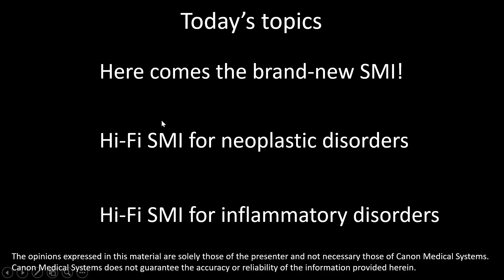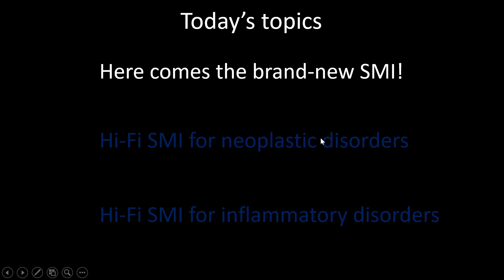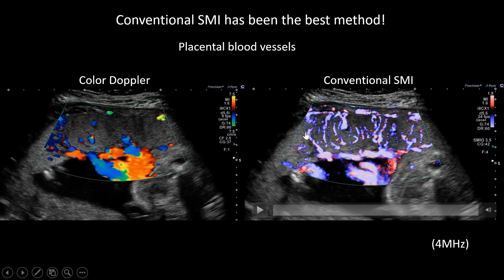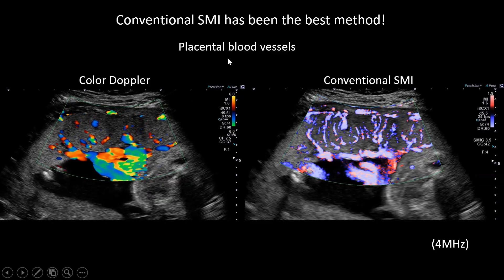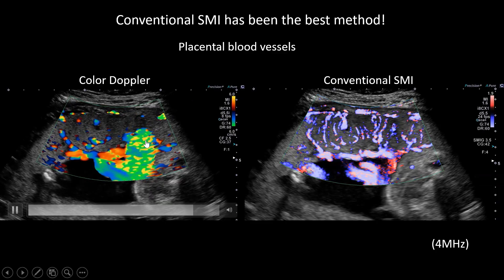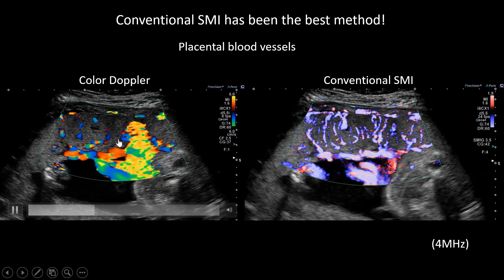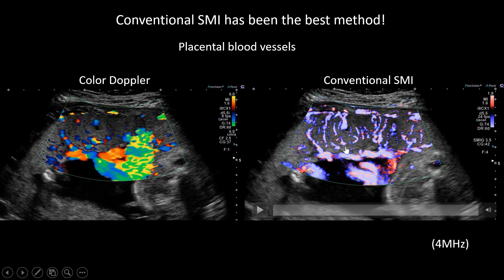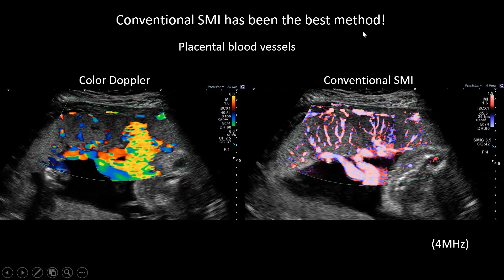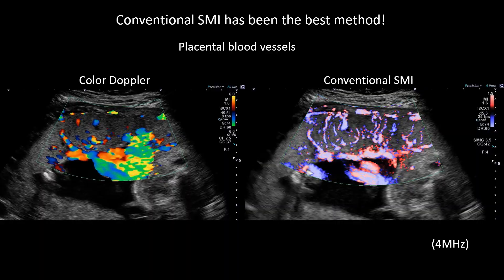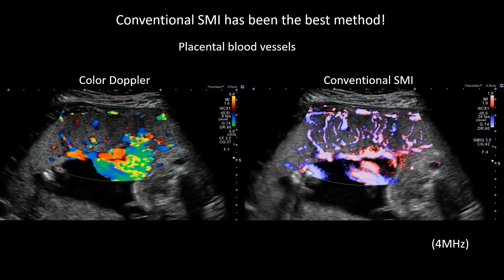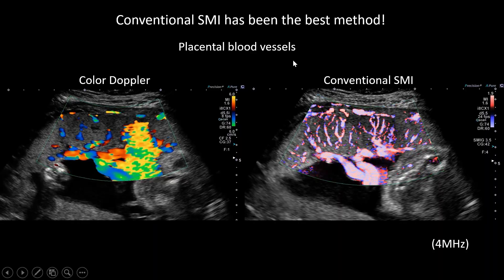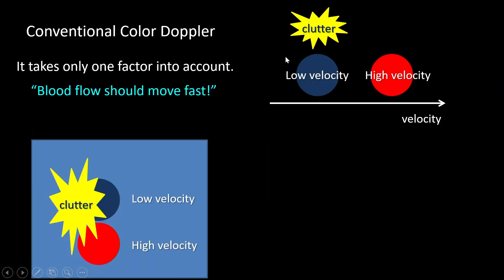Conventional SMI has been the best method so far. This shows the placenta and blood vessels by color Doppler — not so bad, you can see some of the vessels. But using conventional SMI you can see a lot more vessels in detail. I thought this was good enough.